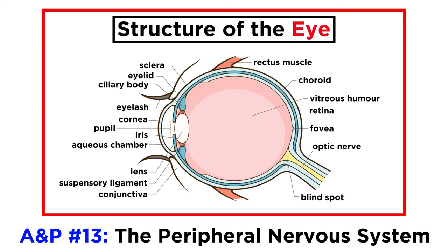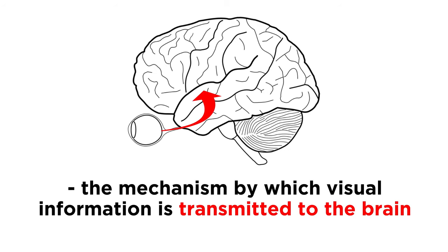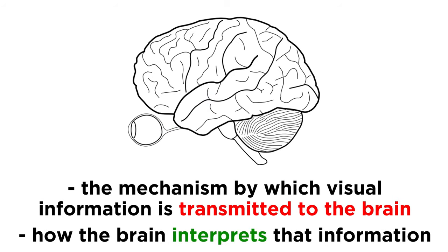We got a basic introduction to the structure of the eye in the anatomy and physiology course when we looked at the nervous system. We will assume that knowledge here, so make sure to check out that tutorial if you need to review that terminology. With the structure of the eye understood, we will now get a closer look at the mechanism by which visual information is transmitted to the brain, and how that information is interpreted.